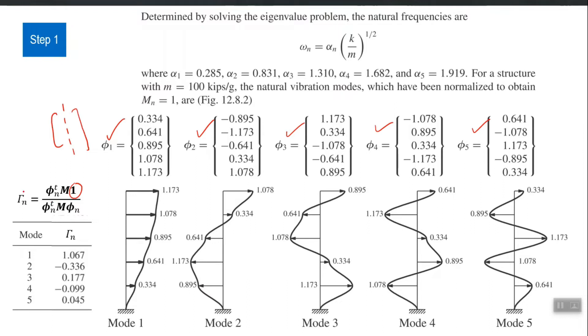So, I can calculate the gamma n or modal participation factor for first five modes. You can see that it is reducing with the frequency mode number and second and fourth mode it is negative, first, third, and fifth it is positive. This will be actually the step one which we have discussed.